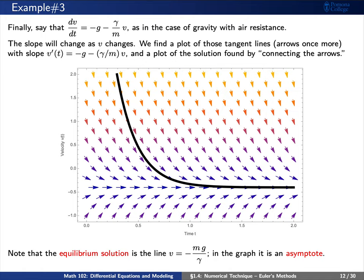As a third example, say that we have now an object falling under gravity, but we'd like to keep track of air resistance. Notice that the slope, dv/dt, will change as the velocity changes.